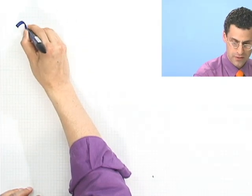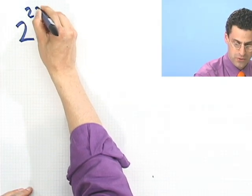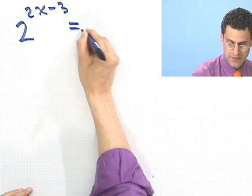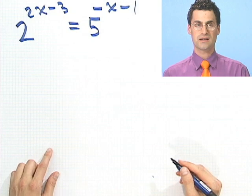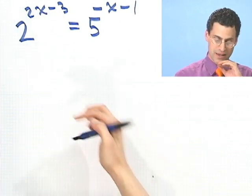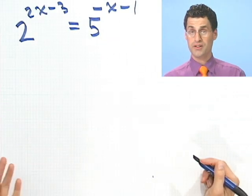Suppose I want to solve 2 to the 2x minus 3 equals 5 to the minus x minus 1. I want to find the value of x. I want to find the value of x which makes this thing hold.